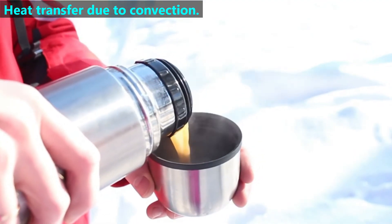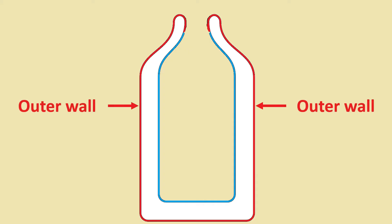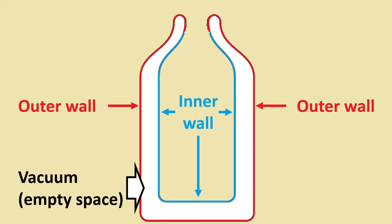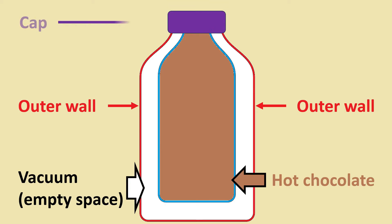Now let's return to how these flasks do such a good job. Inside the flask, there's a large gap between the outer wall and the inner wall — that gap is a partial vacuum. A perfect vacuum is impossible to achieve, but even a partial one is almost empty space. Without any air or fluid between the walls, there can be no convection that transfers heat between the contents of the bottle and the environment. Because it's only a partial vacuum, eventually there will be heat transfer, but not for a long time.